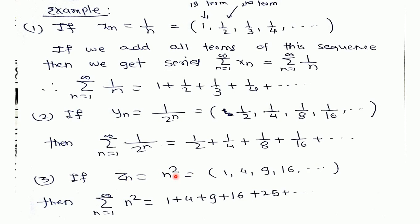For another example, if our sequence zn equals n², then its terms are 1, 4, 9, and so on. These terms are generated by putting n=1, n=2, n=3, and so on. If we add all these terms, we get the series of n², that is 1 plus 4 plus 9 plus 16, and so on.